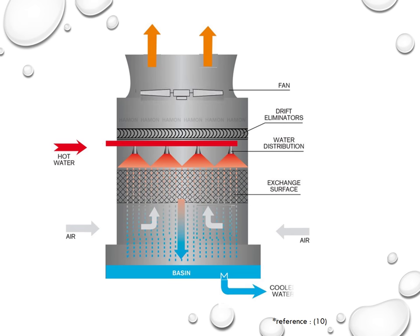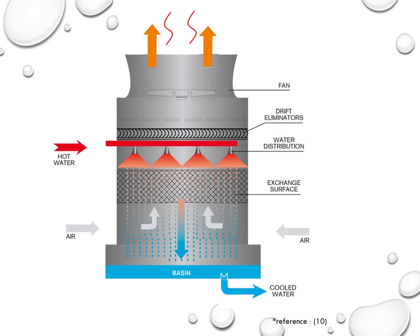During evaporation there is a significant water loss which exits the cooling tower and gets discharged into the atmosphere as hot moist water vapor. In order to prevent this evaporation loss, drift eliminators are used.